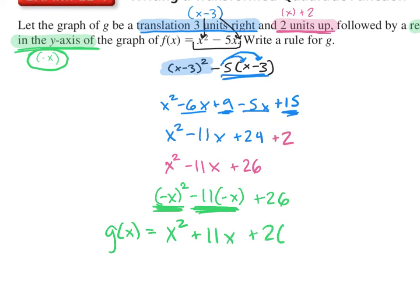We just add our 26 at the end, so g of x equals x squared plus 11x plus 26. We just have to apply one transformation at a time: apply your transformation, simplify it, apply the next transformation, simplify it, apply the transformation.